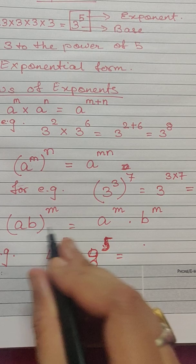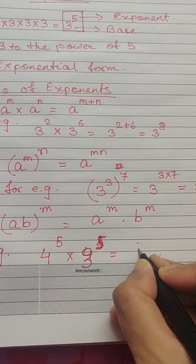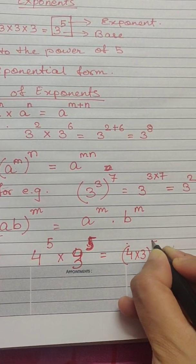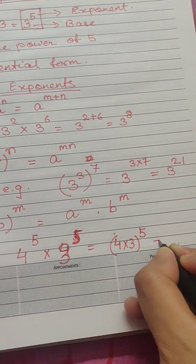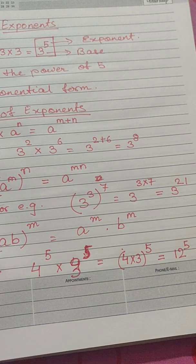So, 4 to the power 5 into 3 to the power 5. In this case, as the law tells us, we will be multiplying the bases that is 4 into 3 and we will be taking the exponent to be common. So, this becomes 12 to the power 5.